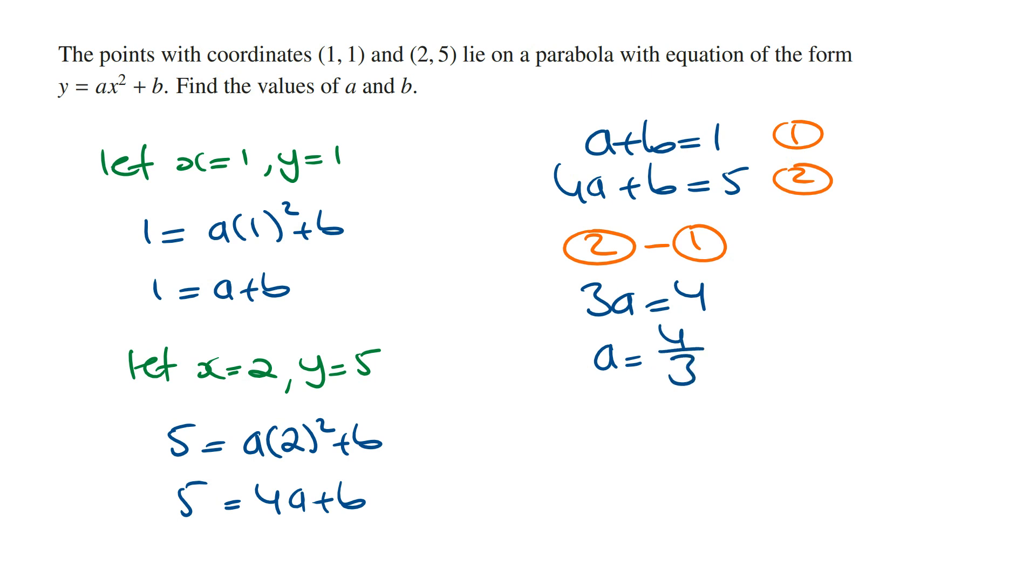To solve for b, we need to substitute a = 4/3 into either the first equation or the second equation. Using the first one is easier, so we can say that 4/3 + b = 1, which means that b = 1 - 4/3.